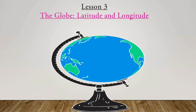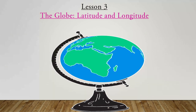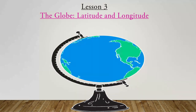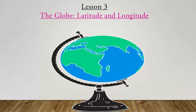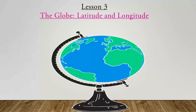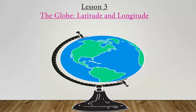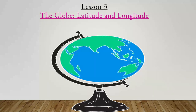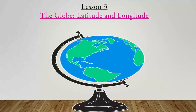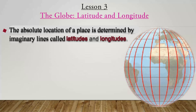Let us go through the important points of the lesson: the globe, latitude and longitude. With the help of the globe, you can see the entire earth at a glance. It shows you different countries, continents and oceans along with their latitudes and longitudes. In any place, you can see the exact location using latitudes and longitudes.